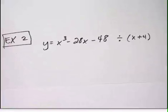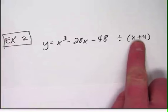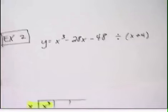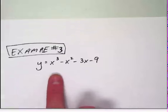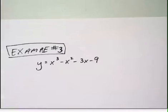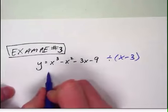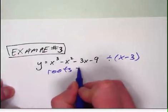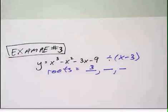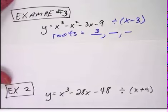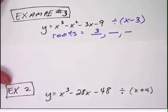So here is one, do x cubed minus 28x minus 48, and then divide into that x plus 4. And I know that that's one of the roots, it has a root at negative 4. And then a third example would be to try this one here. x cubed minus x squared minus 3x minus 9. And that one has a root at 3, so you can divide that by x minus 3. It has a root at 3. So the roots, one of them is going to be at 3. We need to find the other two. So after you've written those two down, which are examples 2 and 3, you can pause the video and see if you can come up with the three solutions for each.